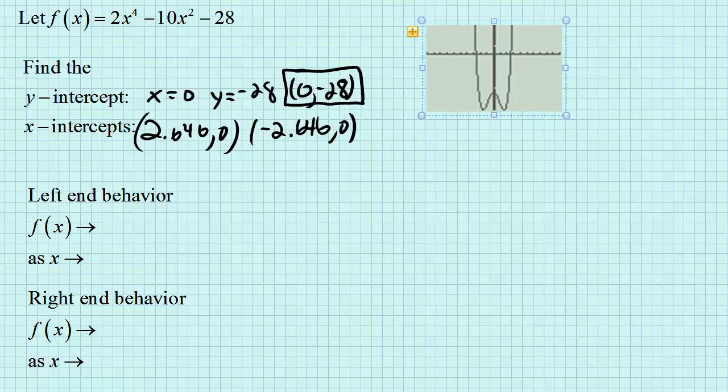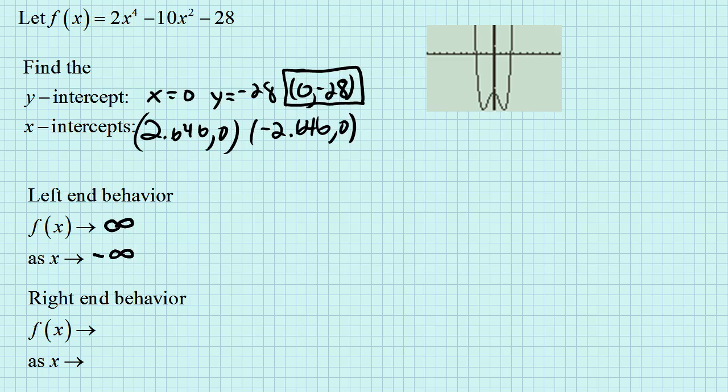That helps us to answer the end behavior question. They ask us what happens at the left end. As x gets very small, that's left end behavior, the function gets very big, goes to infinity. On the right end, as x gets very big, so will the function, the y values. This function continues on in this direction.